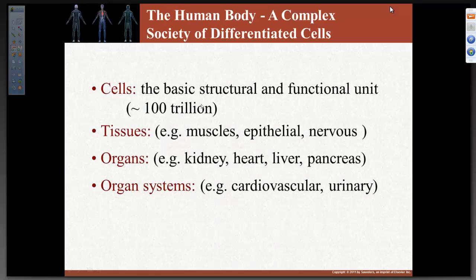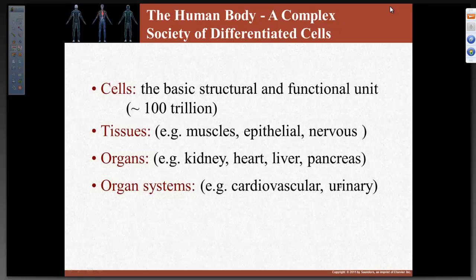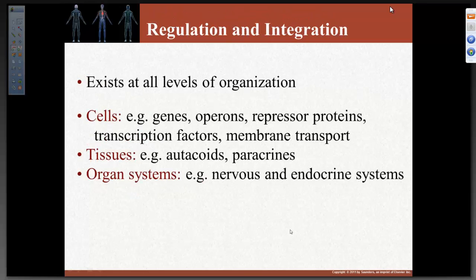The cell is the basic structure and functional unit. The body is composed of 100 trillion cells. You have muscle tissue, blood tissue, nervous tissue. Organs like the kidney, heart, liver, and pancreas. Organ systems like the cardiovascular system. Integration exists at all levels of organization — the cell, gene, transcription, membrane, tissue, and organ systems like the nervous and endocrine system. All of this relates to homeostasis.